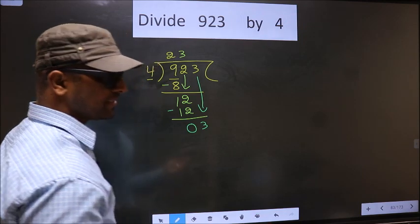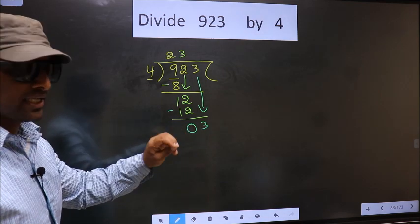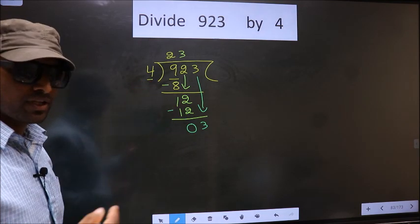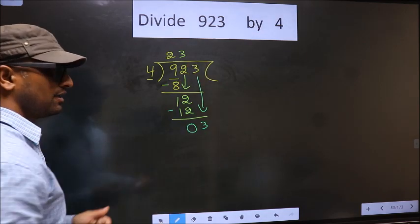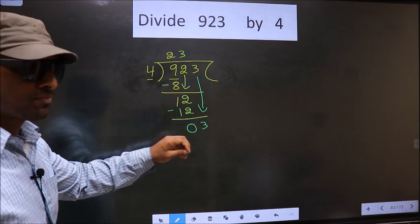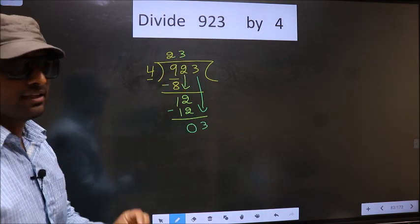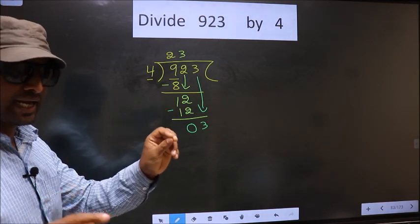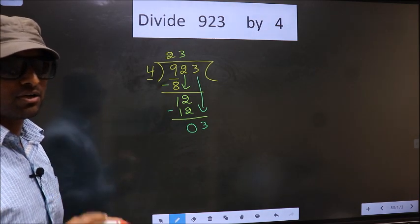This is where the mistake happens. Here we have 3, here 4. 3 is smaller than 4. So what many do is, they put a dot and take 0 here, which is wrong. Just now you brought the number down, and in the same step, you want to put a dot and take 0 here, which is wrong. I repeat. Bringing the number down and putting a dot and taking 0, both at the same step, you are not supposed to do.